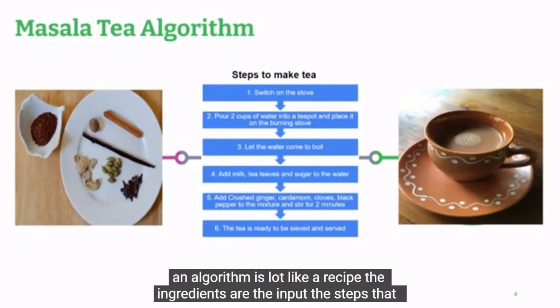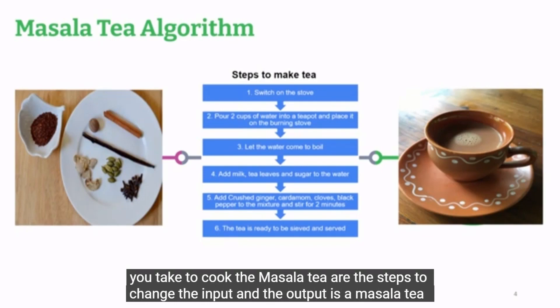An algorithm is a lot like a recipe. The ingredients are the input. The steps that you take to cook the masala tea are the steps to change the input. And the output is a masala tea.